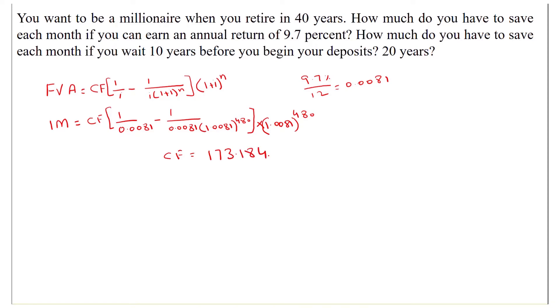So this will be the monthly savings that we will deposit into the bank account for 40 years and earn an interest rate at 9.7%, and after 40 years we will have 1 million in our account.